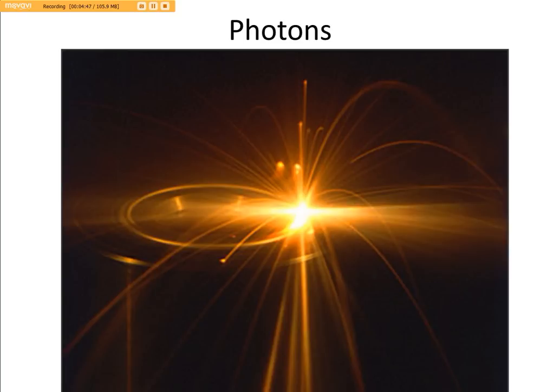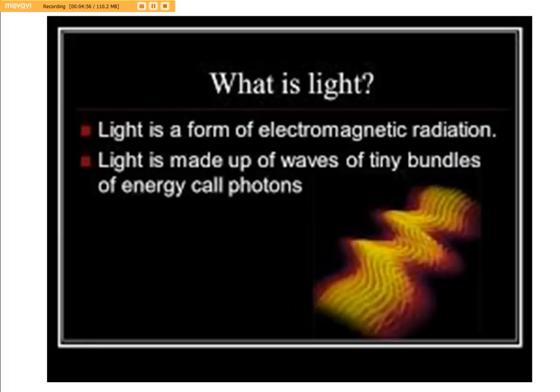It is impossible for them not to be detected. So let's go and check and see what the science says about light photons. What is light? Well, light is a form of electromagnetic radiation. Imagine that folks, it all comes back to electromagnetic properties. Light is made up of waves of tiny bundles of energy called photons.